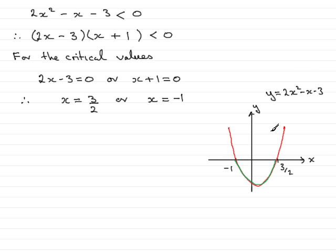And the values of x that make the y values less than 0 are between minus 1 and 1 and a half, 3 over 2. So I want everything in this region here, all the x values. So I can write that like this.